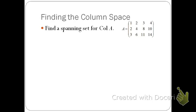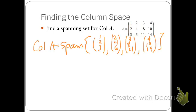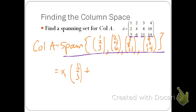Given this matrix A, if we want to find a spanning set for the column of A, we just want to find a set of vectors that span this space. The column of A spans each of the individual columns, so the column of A equals the span of each of the vectors in the matrix — representing their linear combinations.